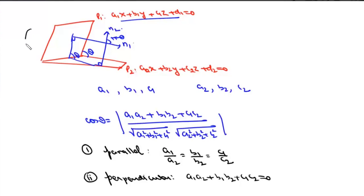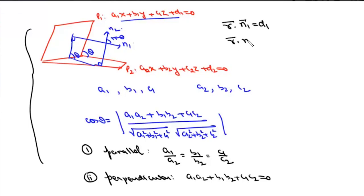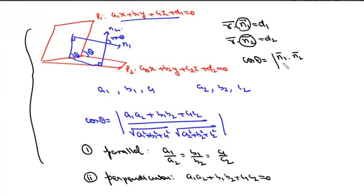If the equation is given in vector form as r·n1 = d1 and r·n2 = d2, the normals are n1 and n2 respectively. We can write cos(theta) = |n1·n2| / (|n1| * |n2|). This is how we find the angle between two planes when vector equations are given.